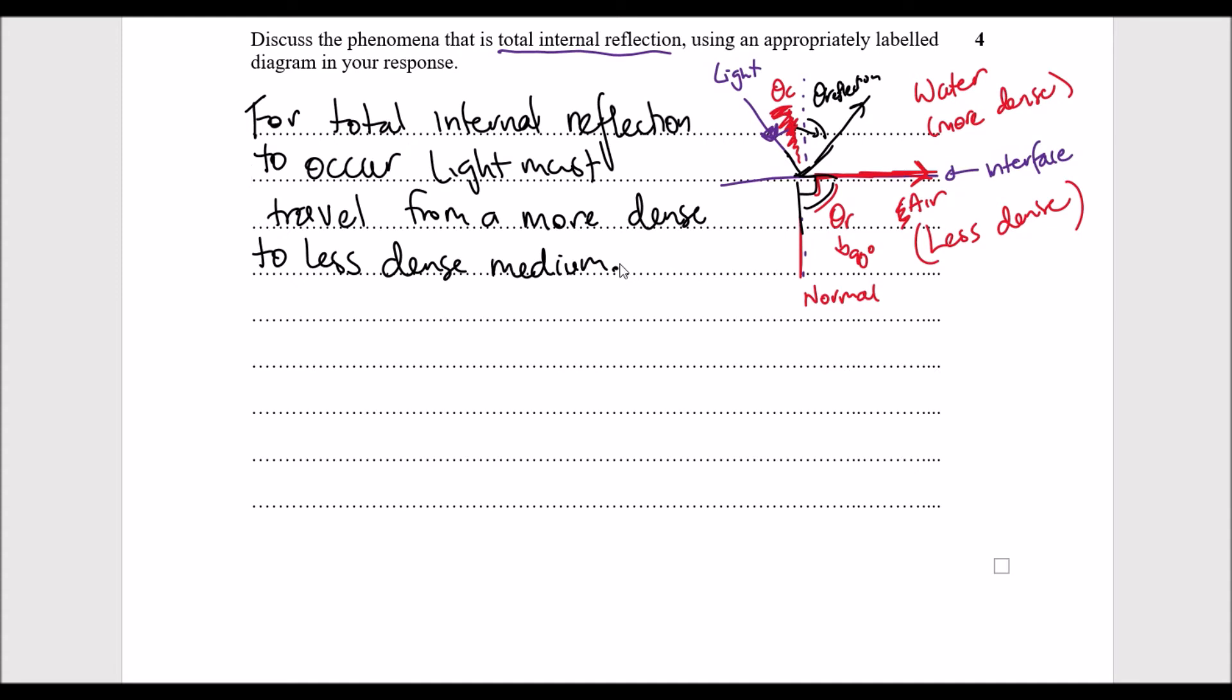Now the reason why that's the case is because as light bends, or as light goes from a more dense to less dense medium, it is going to, you're going to find that the light ray coming in more dense to less dense, the light ray is going to bend away from the normal line. Let's just redo that.